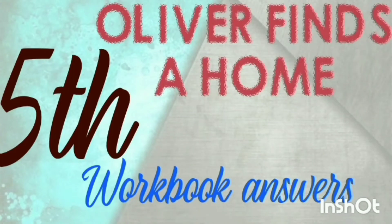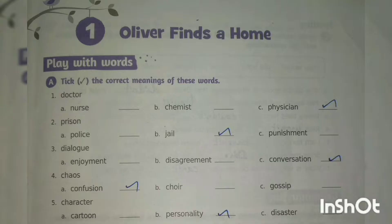My dear children, now let's complete all the exercises given in our workbook. Everyone open your workbook, page number 3. First lesson, that is Oliver Fienseho. Now look at the first Roman numeral — check the correct meanings of these words.